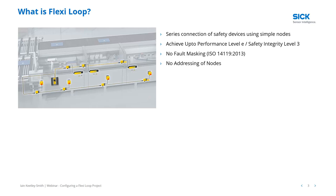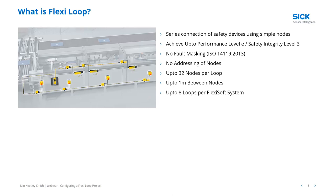The nodes are, in essence, a dumb device from the user's point of view — you don't have to deal with dip switches or manual addressing. All addressing is done automatically within FlexiSoft Designer. You can have up to 32 nodes per loop with one meter between nodes, so in theory you could have a combination of e-stops, gate switches, light curtains, and scanners all connected into a loop one meter apart. You can also have up to eight loops per FlexiSoft system, giving you eight remote I/O networks for your devices.